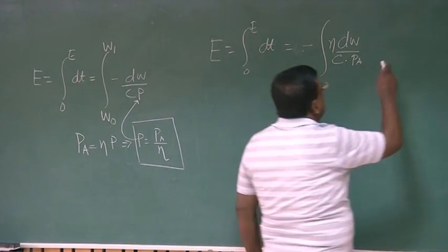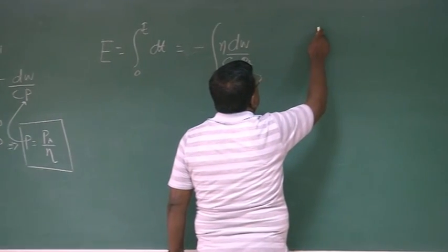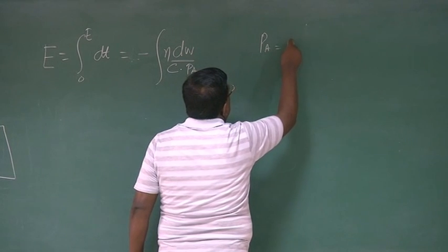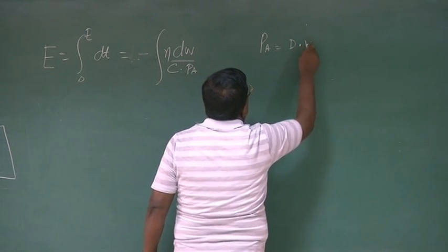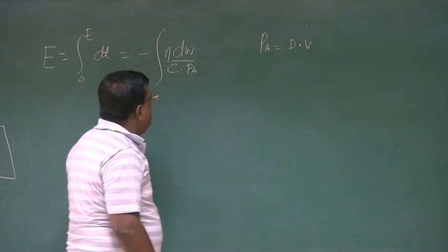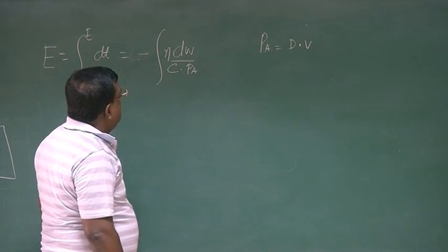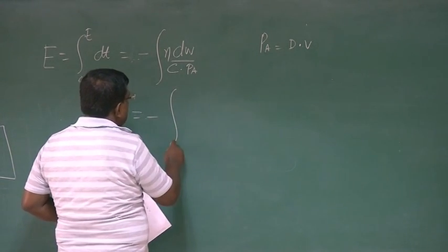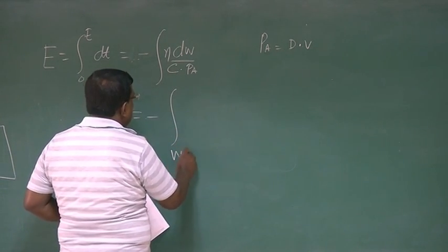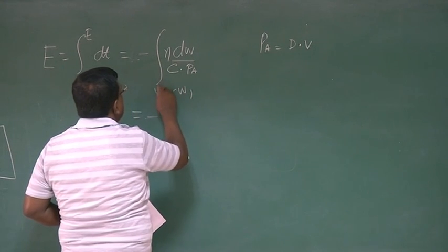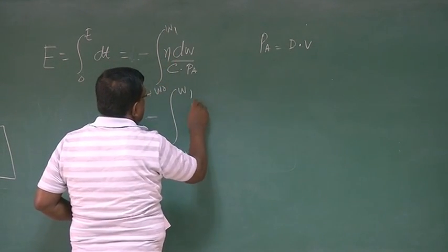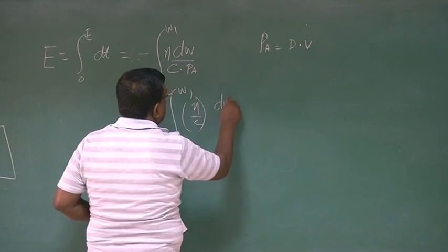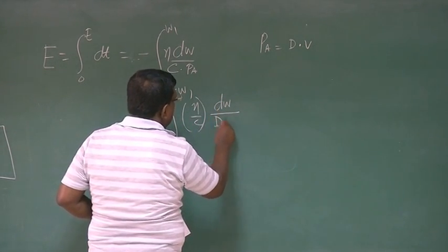Now we know, since we are talking about cruise, we know that power available is equal to drag into V. So I can substitute power available here, and I get an expression W₀ to W₁, η by C, dW by D into V.